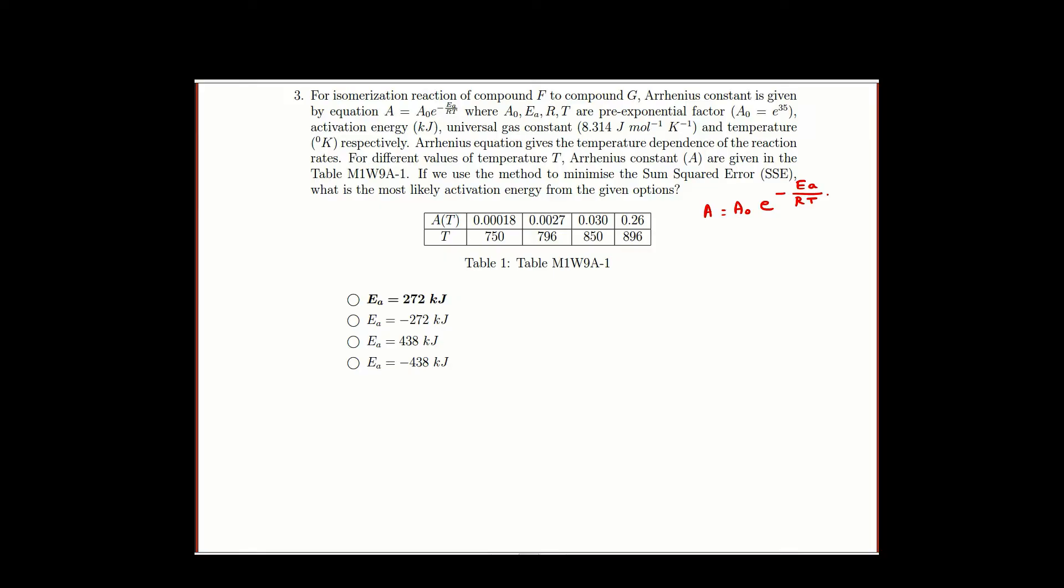Where A naught, Ea, R and T are pre-exponential factor, and A naught is given as E power 35 which is the activation energy, R is the universal gas constant, and T is temperature.